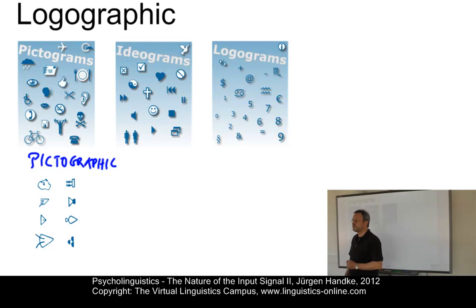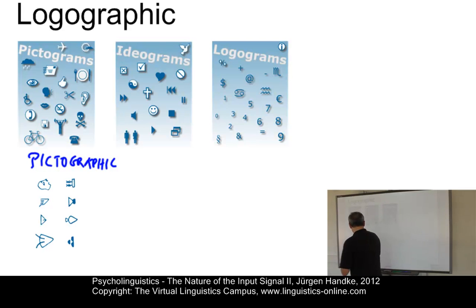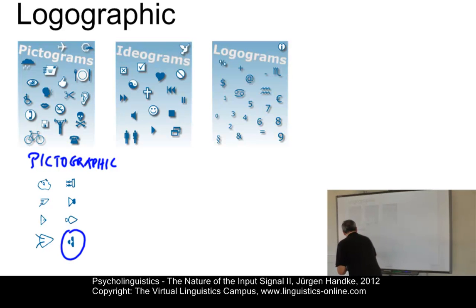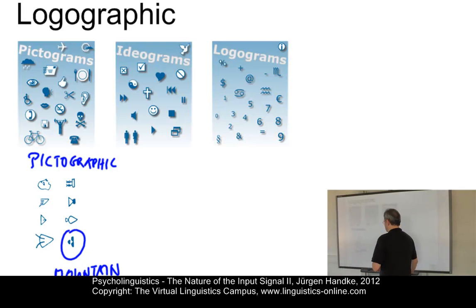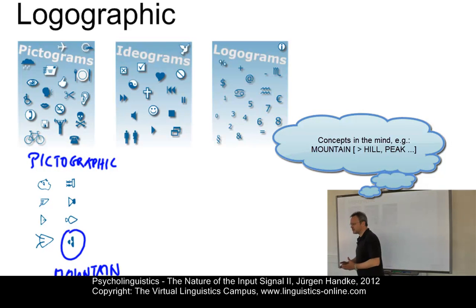One of the earliest examples of a pictographic writing system is that of simple Sumerian pictographs. For example, this symbol here stands for mountain — a symbol that is closely related to its concept.